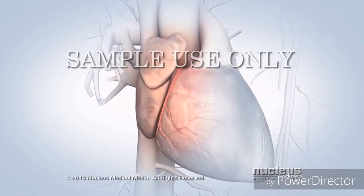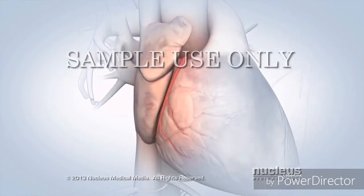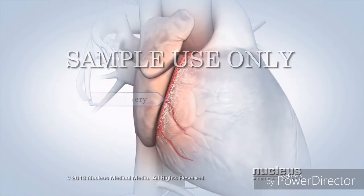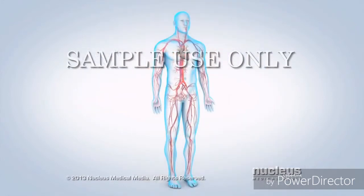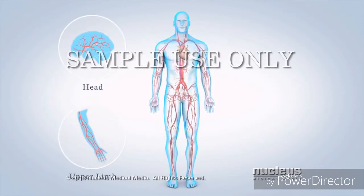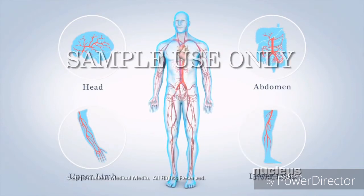The first branches off your aorta are the coronary arteries, which supply your heart muscle with oxygen and nutrients. At the top of your aorta, arteries branch off to carry blood to your head and arms. Arteries branching from the middle and lower parts of your aorta supply blood to the rest of your body.